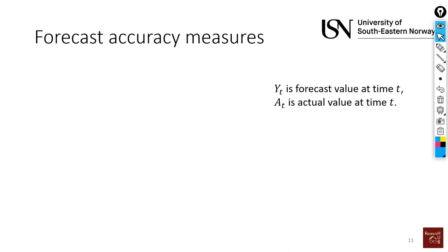The first one I will be mentioning is the MSE, Mean Squared Error. If you look closely here, what we are doing is Y_t is our forecasted value at time t, and A_t is our actual value at time t.